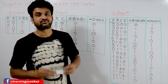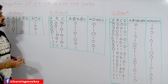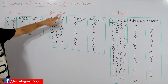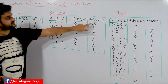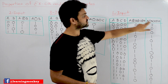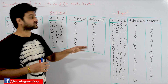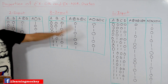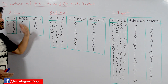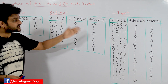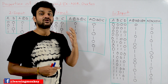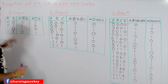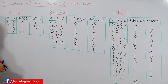Now coming to this class, here we have a two-input truth table for XOR and XNOR, a three-input truth table for XOR and XNOR, and similarly a four-input truth table for XOR and XNOR. Based upon the outputs for different input combinations, we will try to understand the logic behind it — the property of the XOR and XNOR gates.